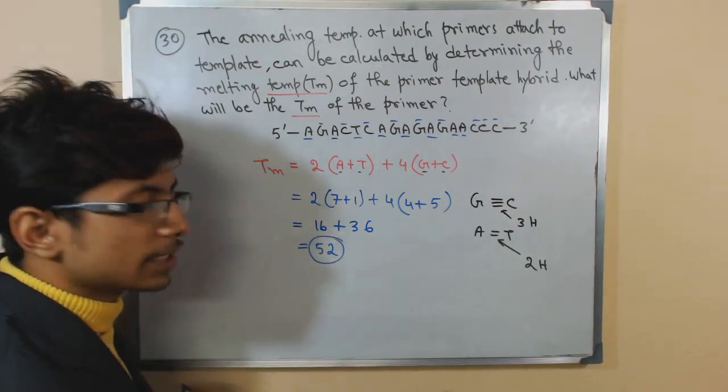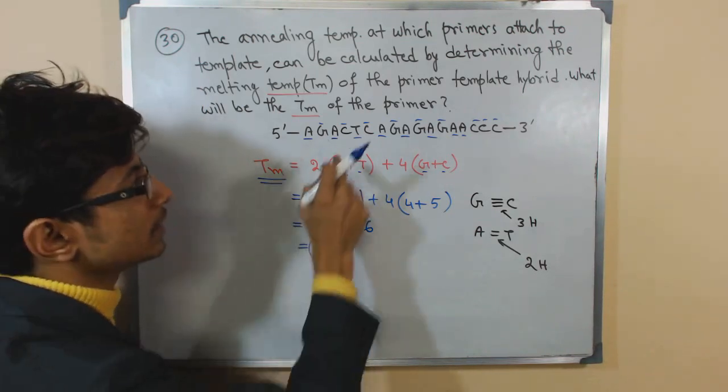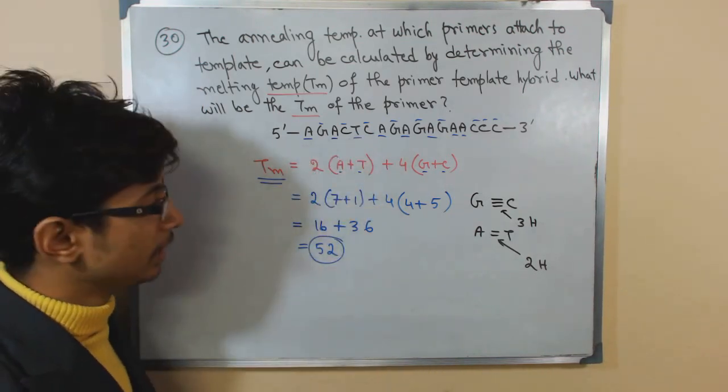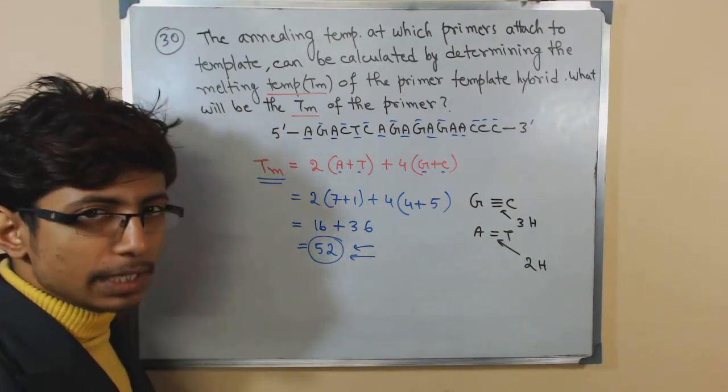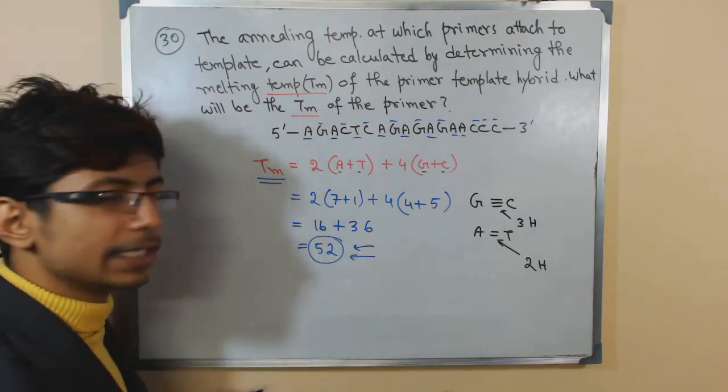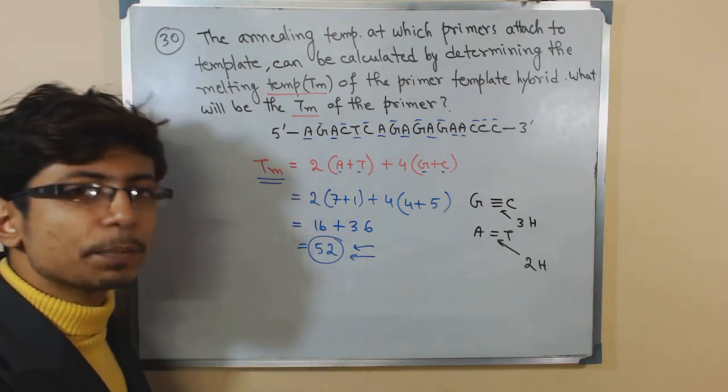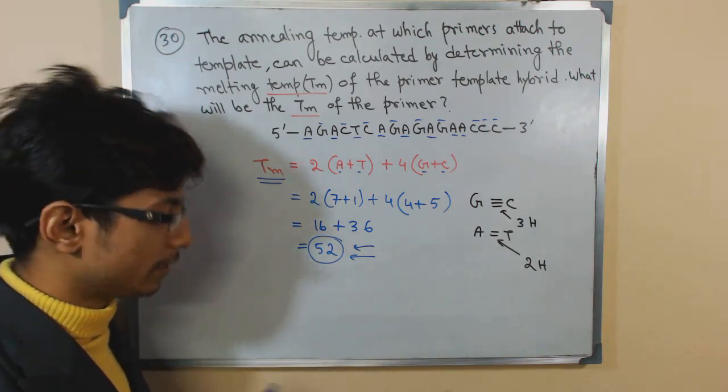52 is the melting temperature or Tm of this primer with the DNA hybrid. By looking at this, you can get the annealing temperature value. Once you get this idea, it will be very easy to set the experiment so that time is not wasted in your PhD career.